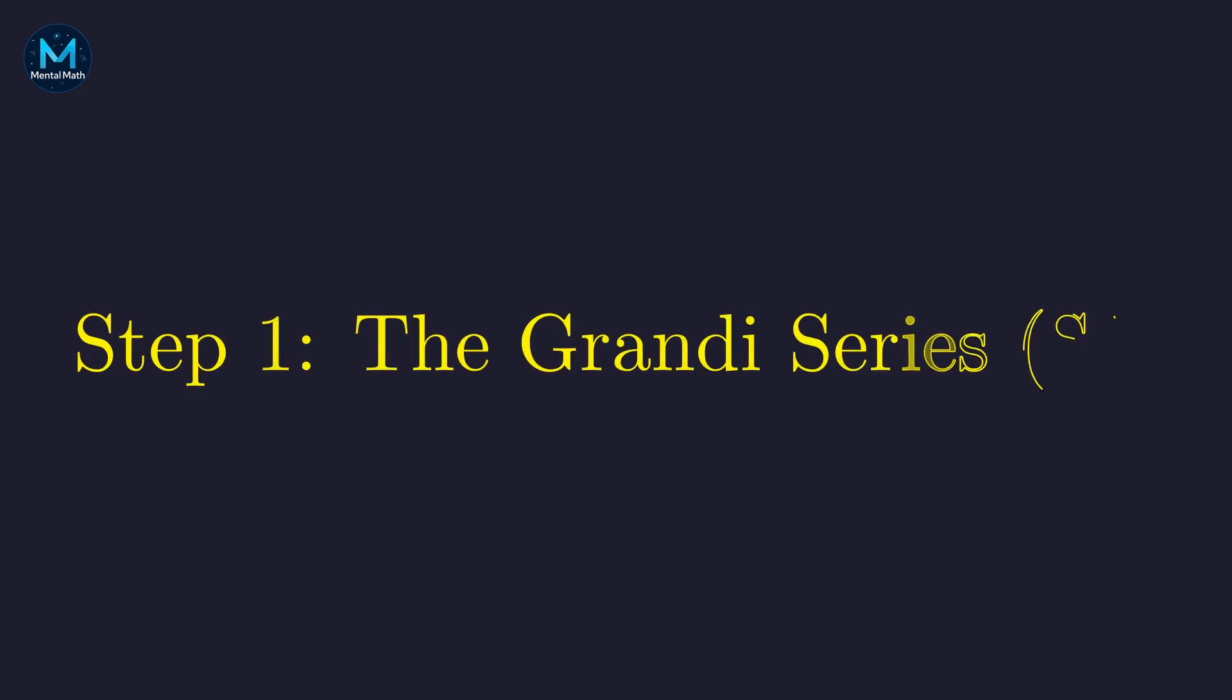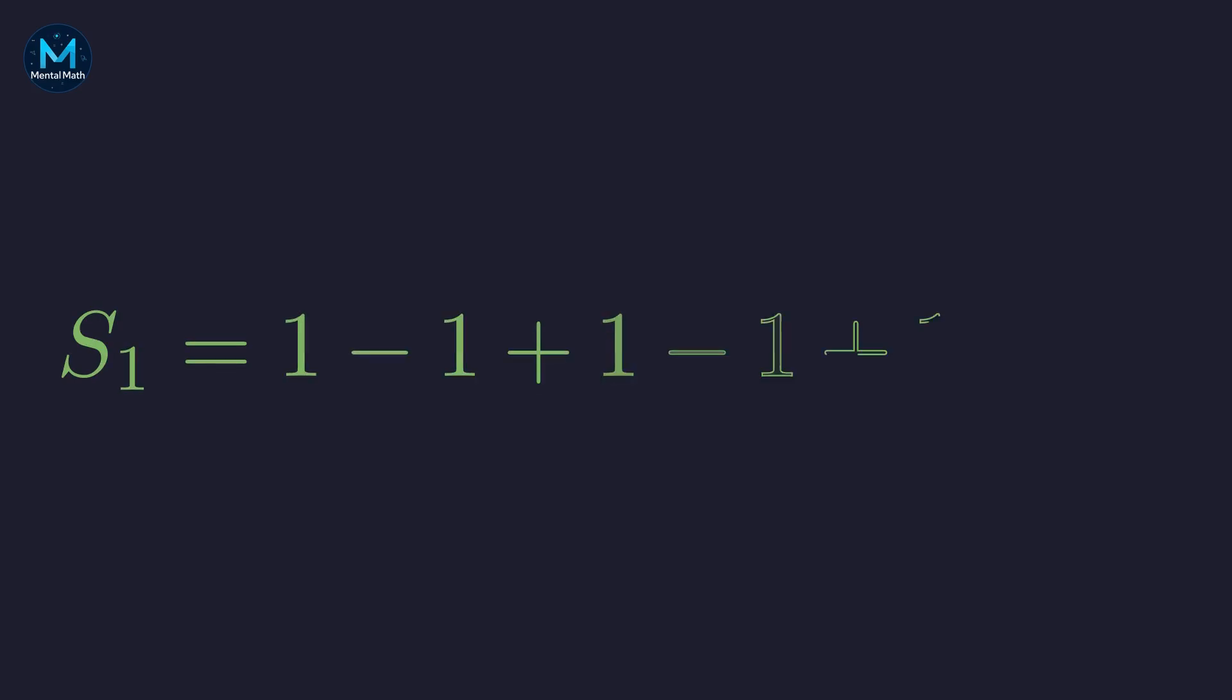Our journey begins with a foundational divergent series known as Grandi's series, which we will label S sub 1. S sub 1 is the sum of alternating ones and negative ones. The partial sums oscillate between 1 and 0, so it never settles on a value. To assign it a value, we must use a non-standard approach.